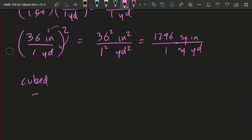So instead of squaring, you would cube. So 36 inches divided by one yard, cube this whole thing. That gives you 36 cubed inches cubed divided by one cubed, yard cubed. And you can multiply 36 times 36 times 36 to get this number. But if you did have to go from cubic inches to cubic yards, this is how you would do it.